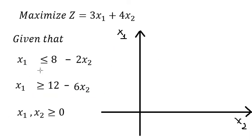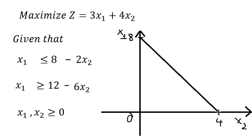The constraint of S1 is less than or equal to 8 minus 2S2. We need to find the points: when S1 equals 0, S2 should be 4, so number 4 goes here. When S2 equals 0, S1 equals 8, so number 8 goes here. We connect the two points and we know that S1 ≤ 8 − 2S2, so that is this shaded area.